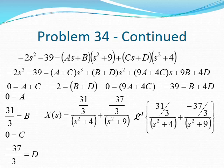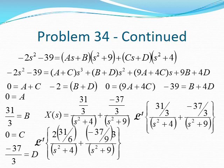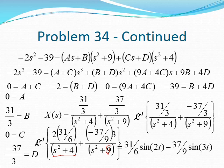Finally, we take the inverse Laplace transform of the partial fraction result. For the term with a squared denominator we multiply and divide by 2 to get the right power, and for the cubic term we multiply and divide by 3. After adjusting, all terms appear in the Laplace transform table, and we obtain the inverse Laplace transform, which is the solution to the original differential equation.